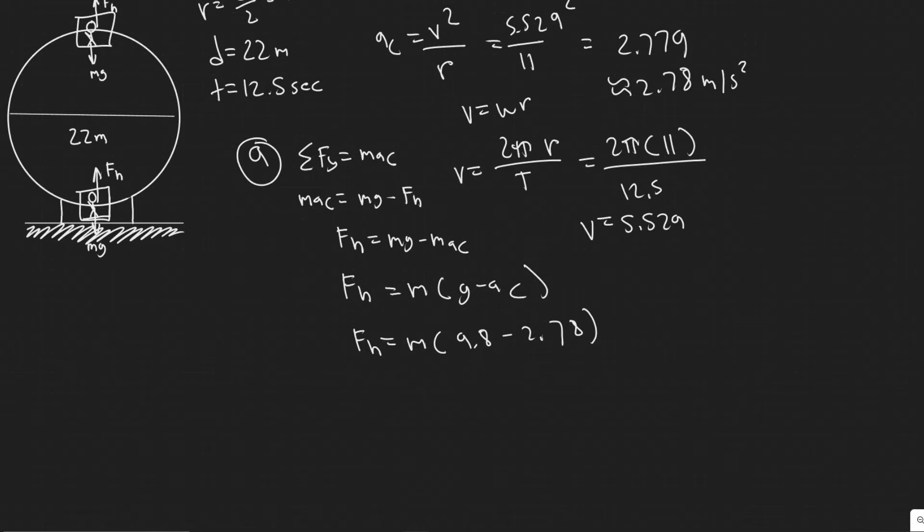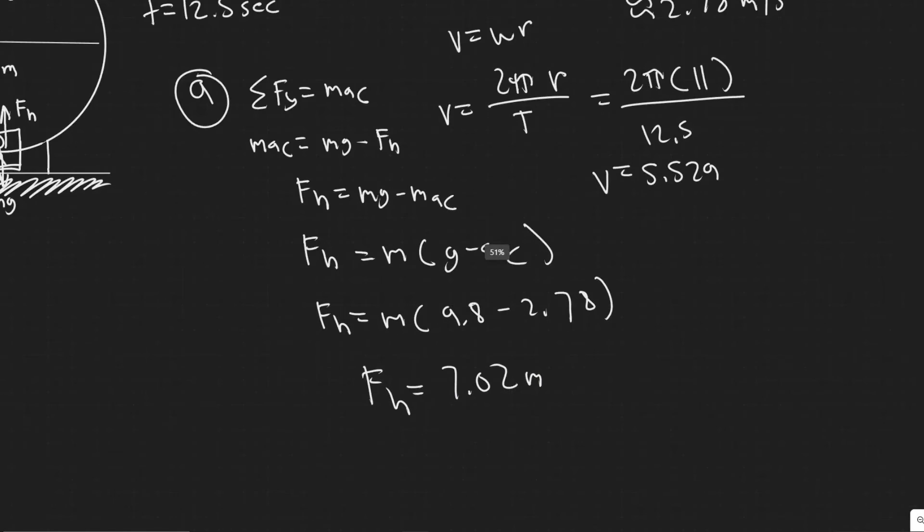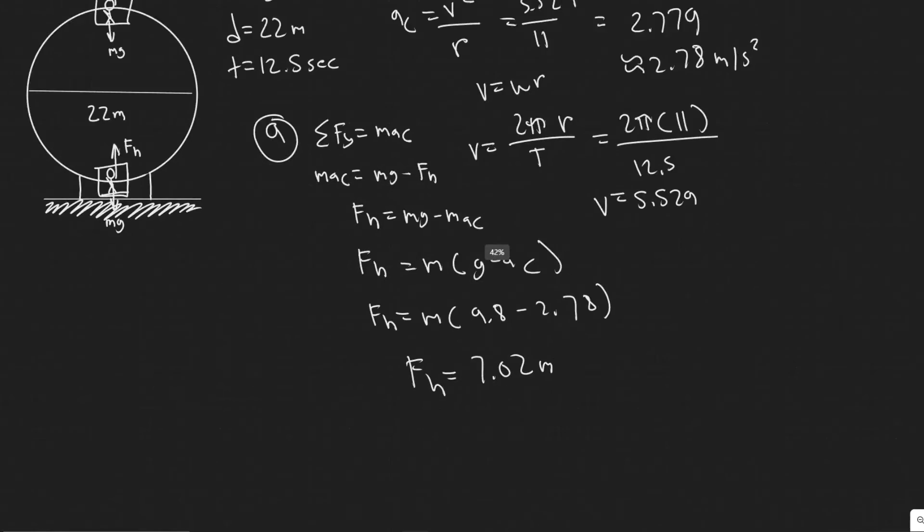So 9.8 minus 2.78, you get F sub n equals M or just 7.02 M. And so we don't know the mass, but it'll cancel. So we have F sub n equals 7.02.